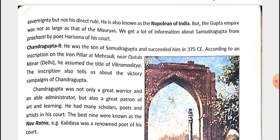In Delhi, at a place called Mehrauli, there is an iron pillar with inscriptions on it. From those inscriptions, it was found that Chandragupta II had the title of Vikramaditya. The inscription also tells us about the victory campaigns of Chandragupta, in which he continued to achieve victories.